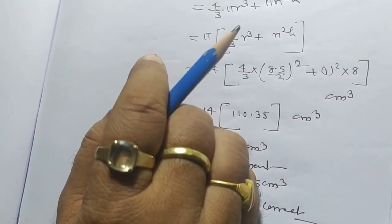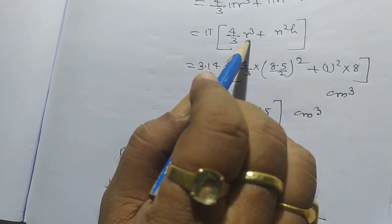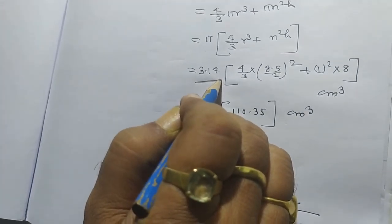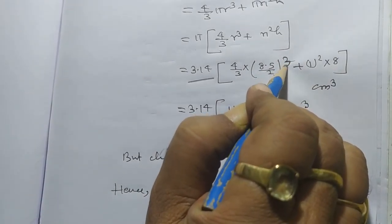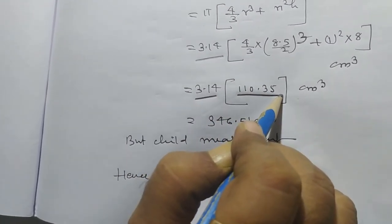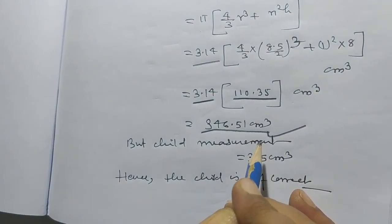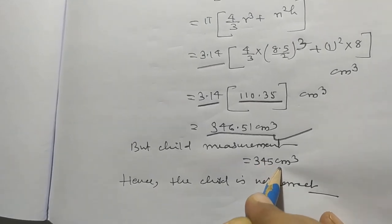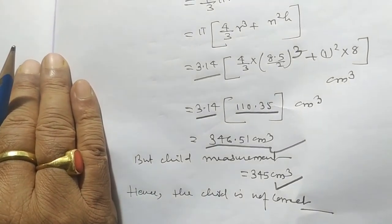Volume of glass vessel equals four by three pi r cube for the spherical portion plus pi r one square h for the cylindrical portion. Taking common pi: four by three r cube plus r one square h. With pi equal to three point one four, r equal to eight point five by two, and solving, it gives three hundred forty-six point five one centimeter cube. But the child's measurement is three hundred forty-five centimeter cube. Hence the child is not correct. In this way we have solved almost all the problems of Exercise 13.2.